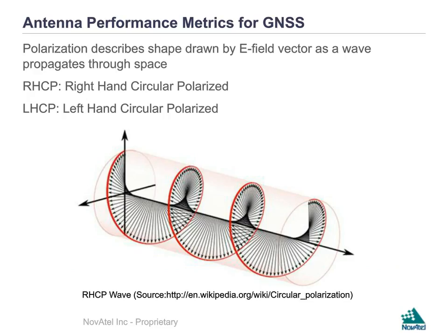Just touching briefly on polarization — polarization is often not well understood. The definition is that it is a description of the shape drawn by the electric field vector as a wave propagates through space. Examining the diagram, we see the wave propagating to the right-hand side of the page. Applying the right-hand rule from electromagnetics, we see that the fingers curl in the direction of the electric field, which is right-hand circular polarization.